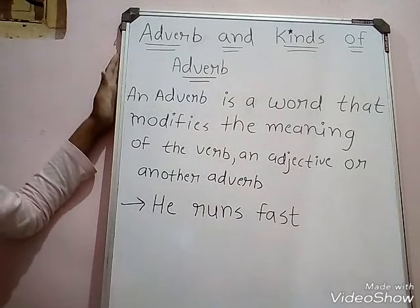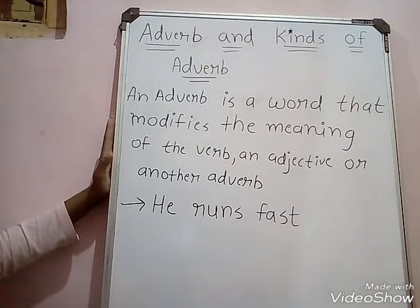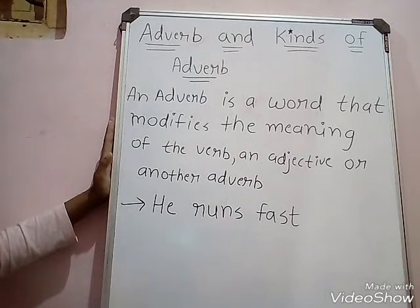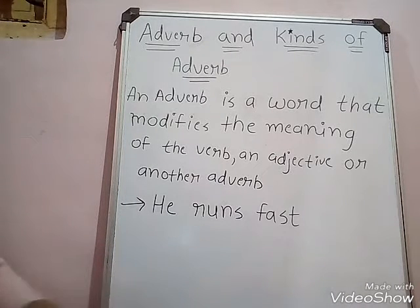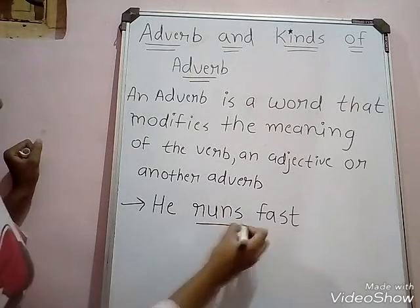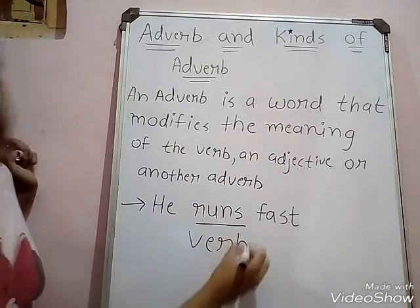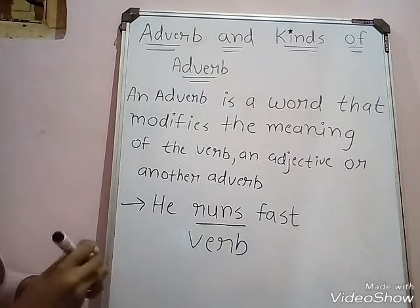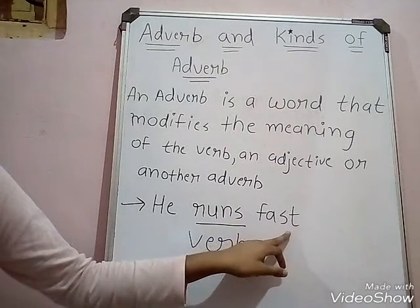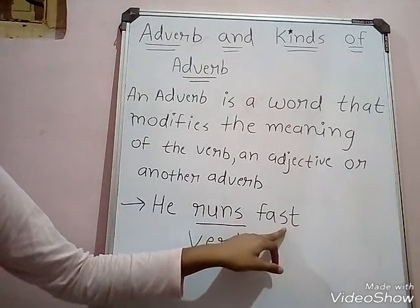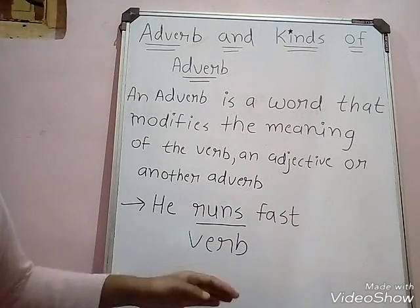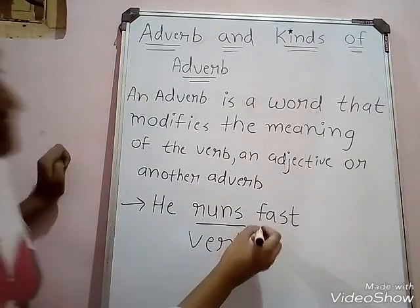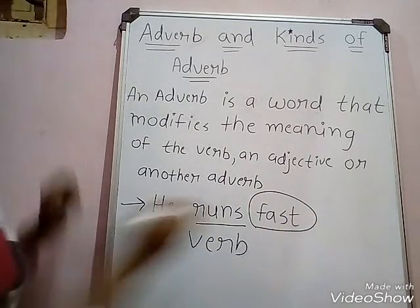What is meant by adverb? An adverb is a word that modifies the meaning of a verb, an adjective, or another adverb. Here is an example: 'He runs fast.' Our verb is 'runs.' But how does he run? Fast. Fast says more about the verb, and the word that says more about a verb is an adverb. So 'fast' is our adverb.